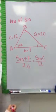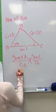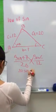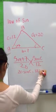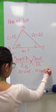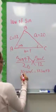You will then cross multiply and you will get 20 sin C equals 12 sin 47. To cancel out the 20, you will divide each side by 20.